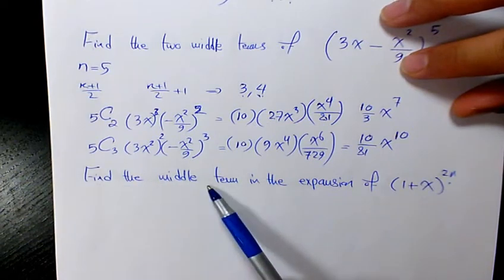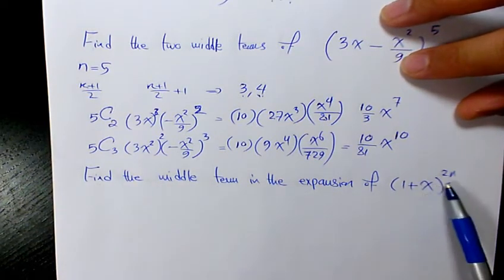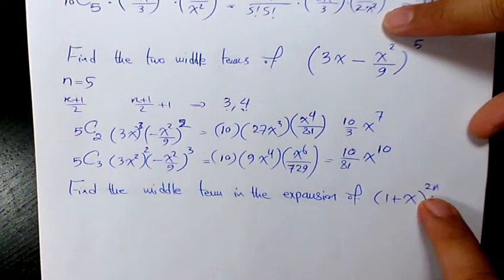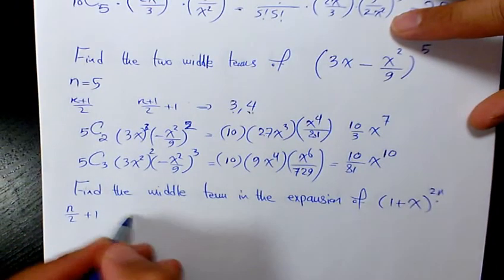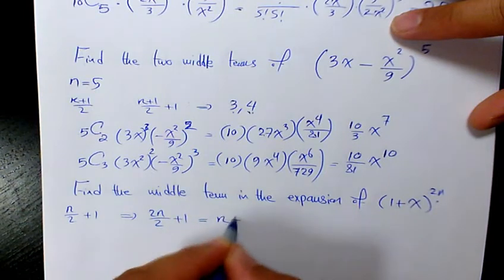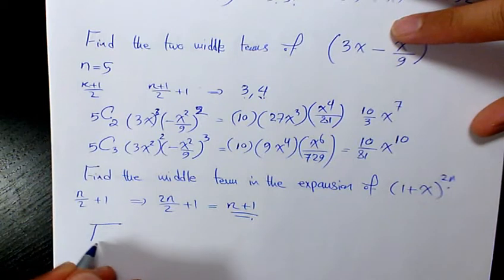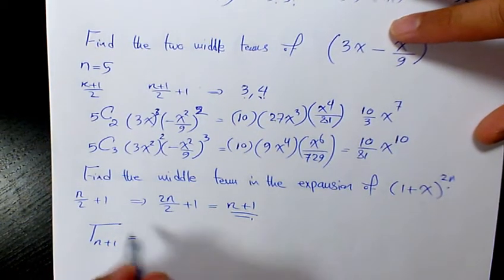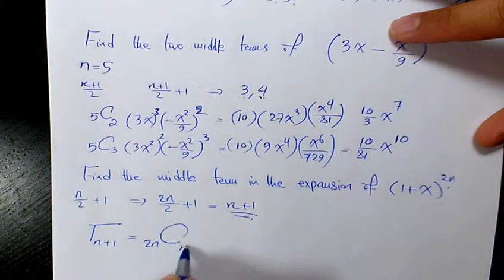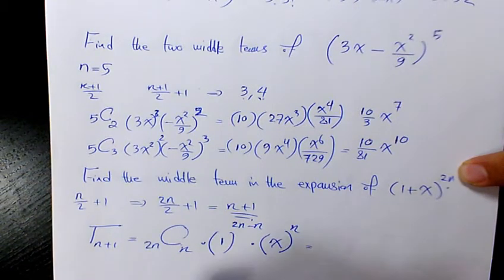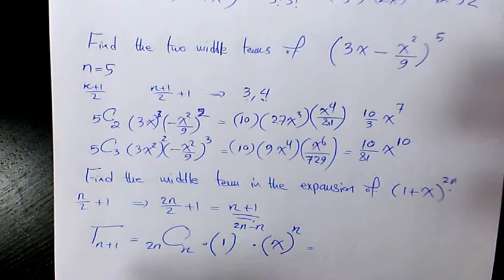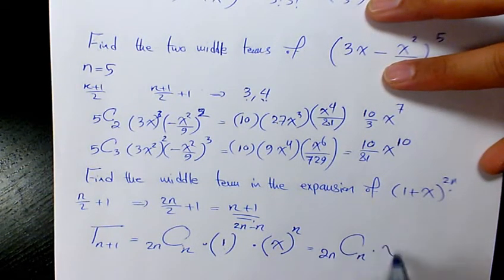Next, find the middle term in the expansion of (1 + x) to the power of 2n. Since 2n is an even number, the middle term is found by n/2 + 1 in general, but here we have 2n, so 2n/2 + 1 = n + 1. So the middle term is the (n+1)th term, meaning r = n. That gives us 2nCn times 1 to the power of (2n − n) times x to the power of n, and since 1 to any power is 1, we get 2nCn · x^n.